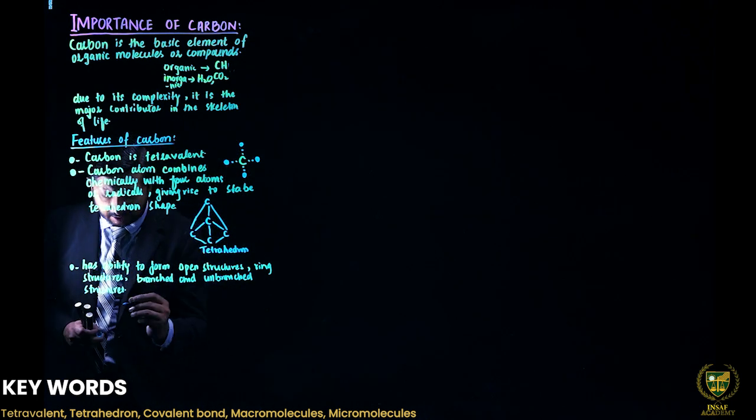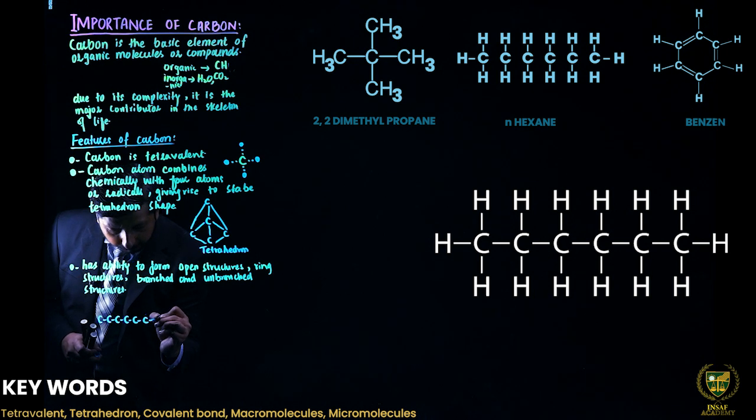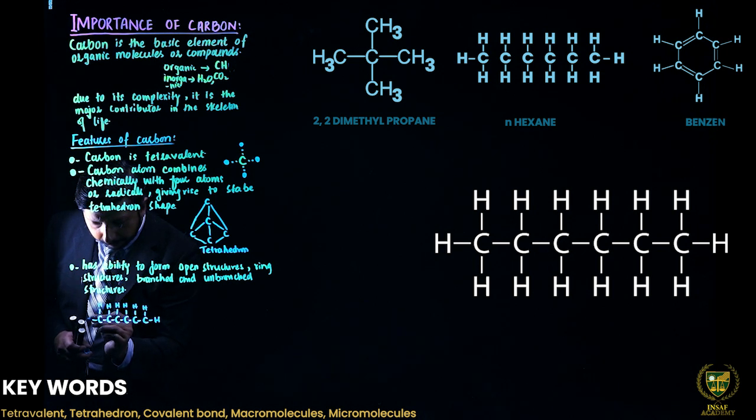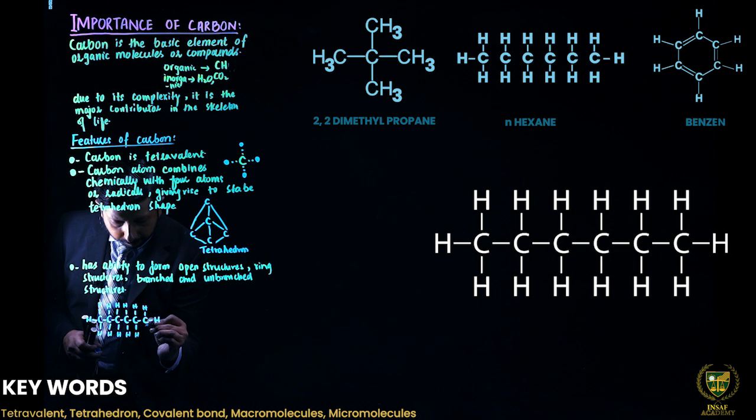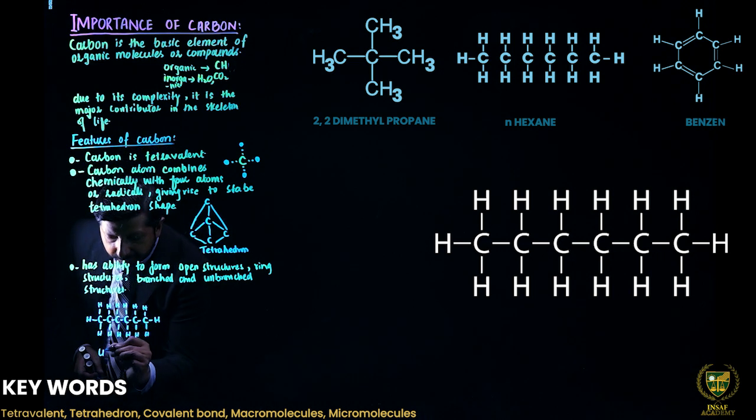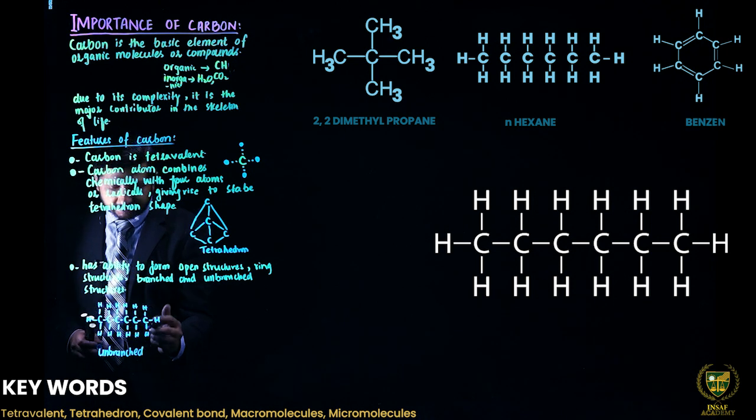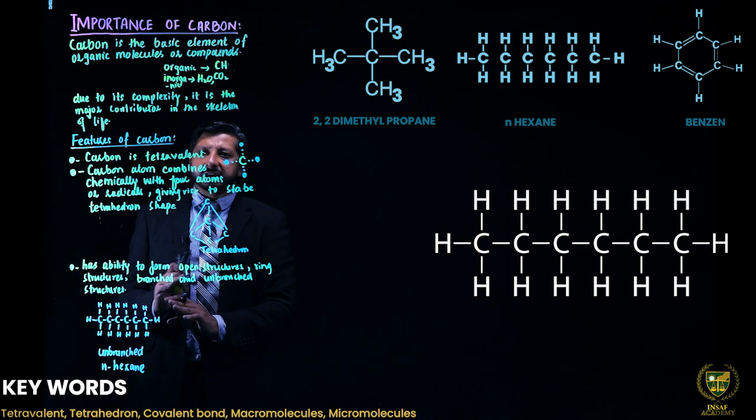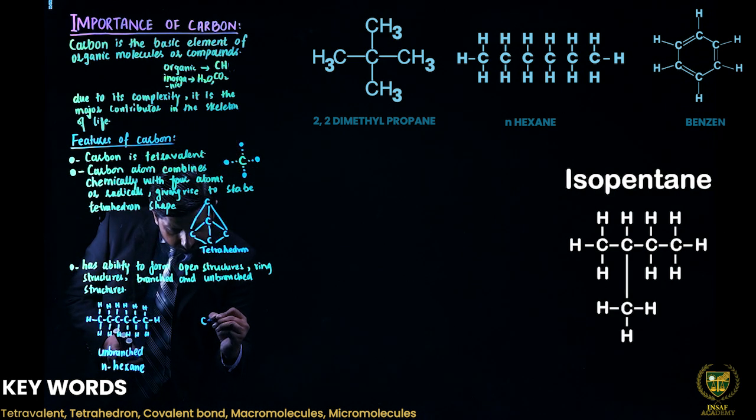So here is an example of the unbranched structure formed by carbon. This is one, two, three, four, five, six. This is hexane with six carbon atoms and single bonds, also called an alkane, which has a linear structure.